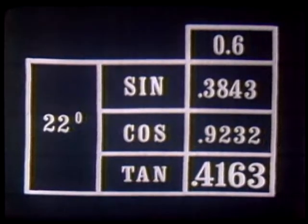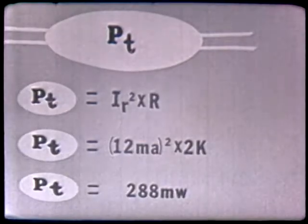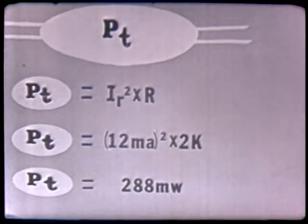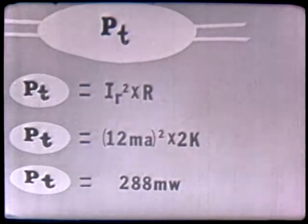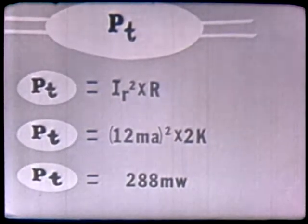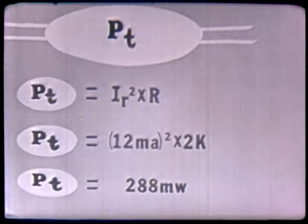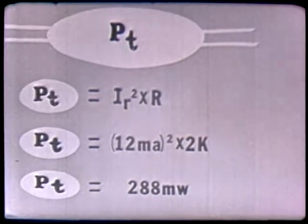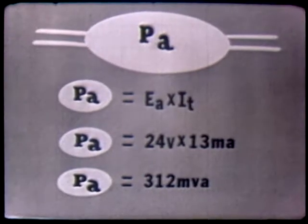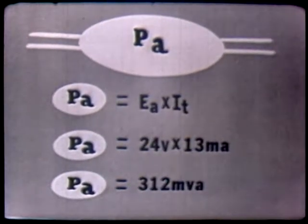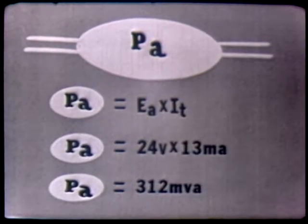Now that we have calculated our current by Pythagorean theorem and our phase angle of 22.6 degrees, we can determine the power dissipated in our circuit — the true power, Pt. Using the formula P equals I squared times R, since R is the only component that dissipates power, substituting gives us a true power of 288 milliwatts. In any reactive circuit we also have apparent power, Pa, which equals the applied voltage times the total current. Substituting gives us 312 millivolt-amperes of apparent power.